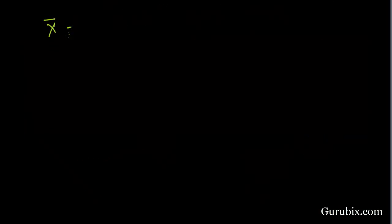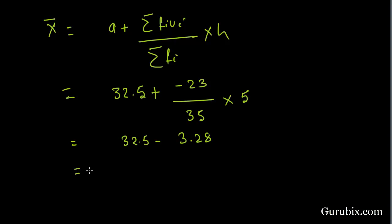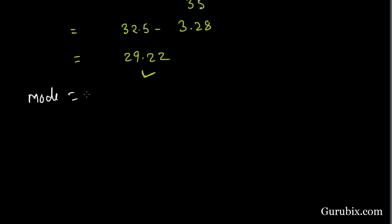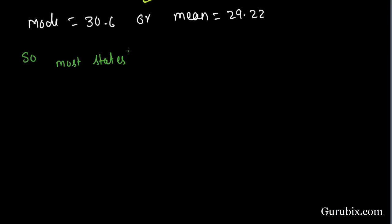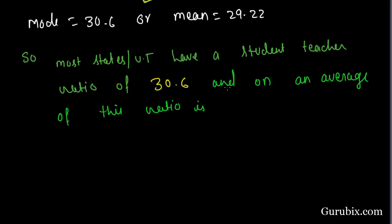We know that mean x-bar equals A plus (summation of FiUi divided by summation of Fi) into H. This equals 32.5 plus (minus 23 upon 35) into 5, which equals 32.5 minus 3.28, equals 29.22. Hence, the required mean is 29.22. So mode equals 30.6 and mean equals 29.22, meaning most states or UTs have a student-teacher ratio of 30.6, and on average this ratio is 29.22.